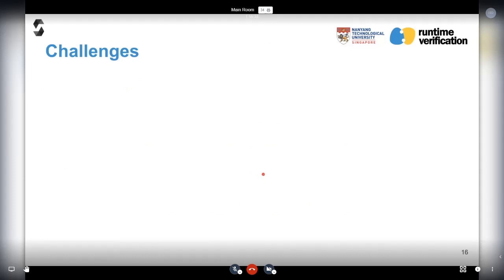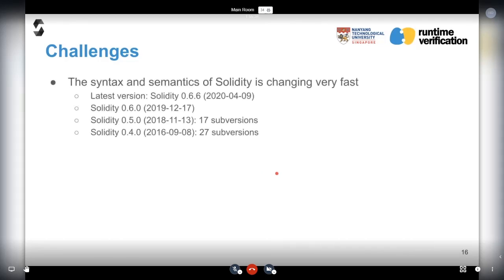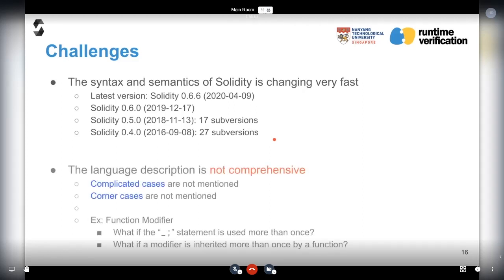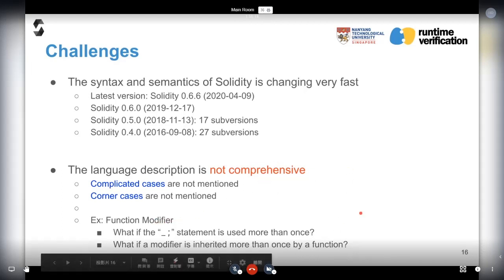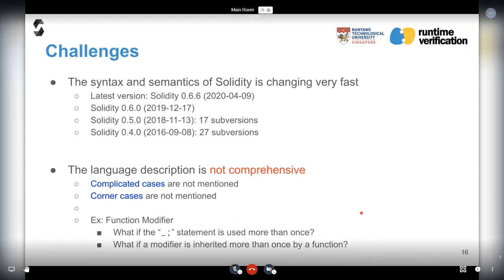Now I'm going to talk about the challenges we faced when we developed the semantics. The first challenge is that Solidity is changing very fast in either syntax or semantics. Currently the latest version is 0.6, but if you look into the version history, on average almost every month will have a version change, which is quite challenging for us to run after the frequent version changes. The second challenge is that the language description in the official document is not comprehensive. Usually complicated or corner cases are not mentioned. For example, with function modifiers, what if the underscore statement is used more than once? What if the modifier is inherited more than once by a function? We need to figure this out by ourselves based on experiments, which is quite time-consuming.